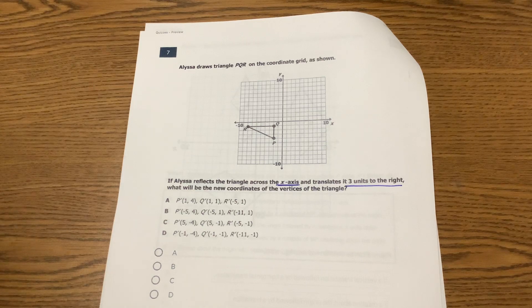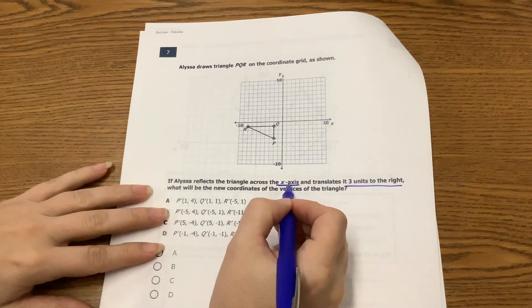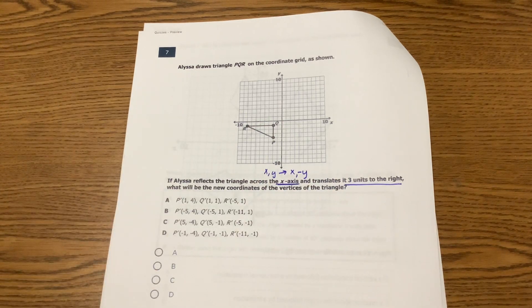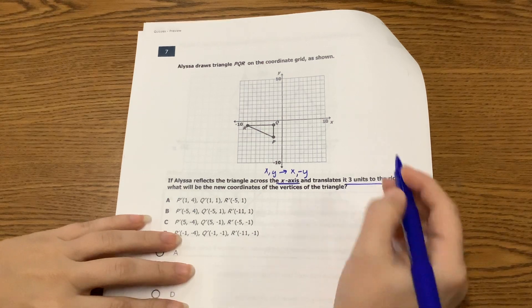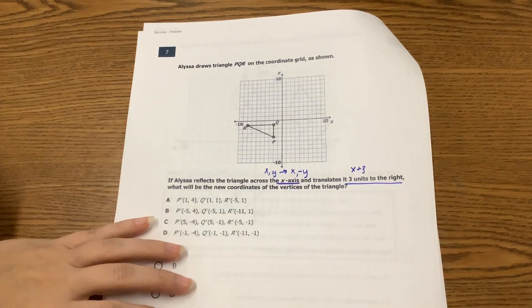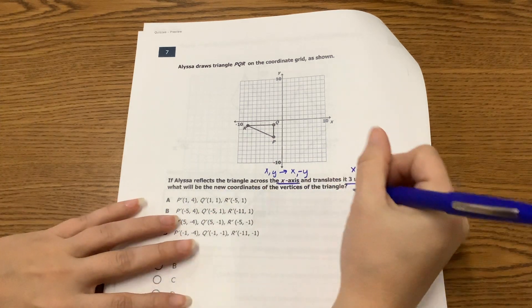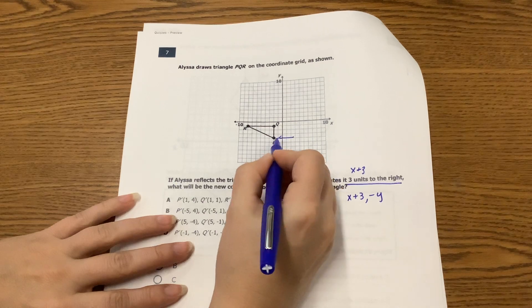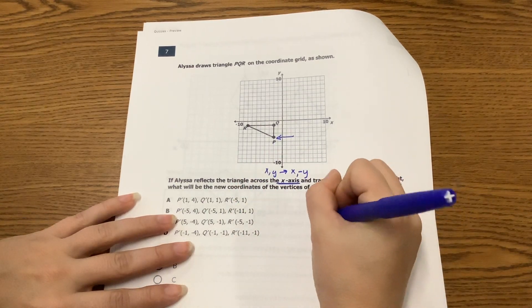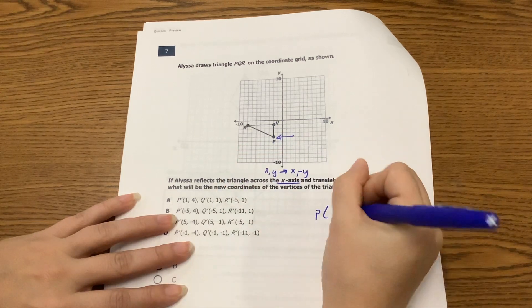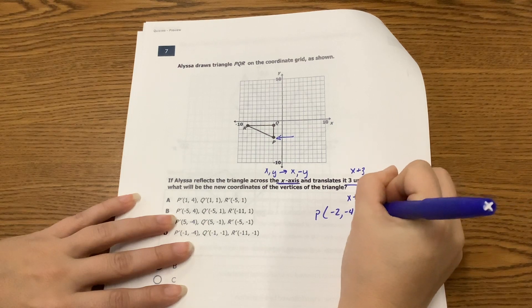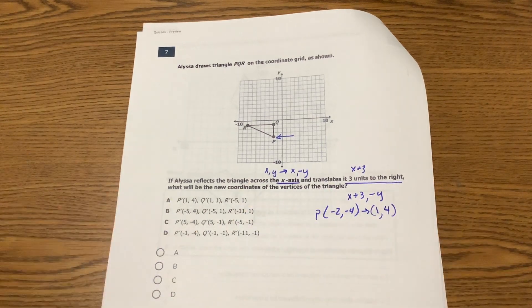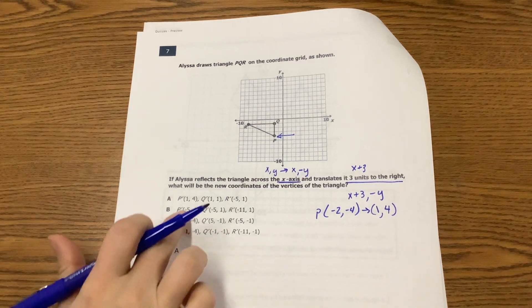Okay, so remember that whenever we reflect something across the x-axis, we take X and Y, we keep X the same and just change the Y's sign. Then when we move three units to the right, we're gonna take X and add three. So you could do this rule in one step by taking the X value and adding three, and then taking the Y value and changing its sign. So if you find point P here, point P is negative two, negative four. Add three to negative two - that's going to be one. And then change the sign of negative four to positive four. So our new ordered pair is one, four for P. Check your answer choices.